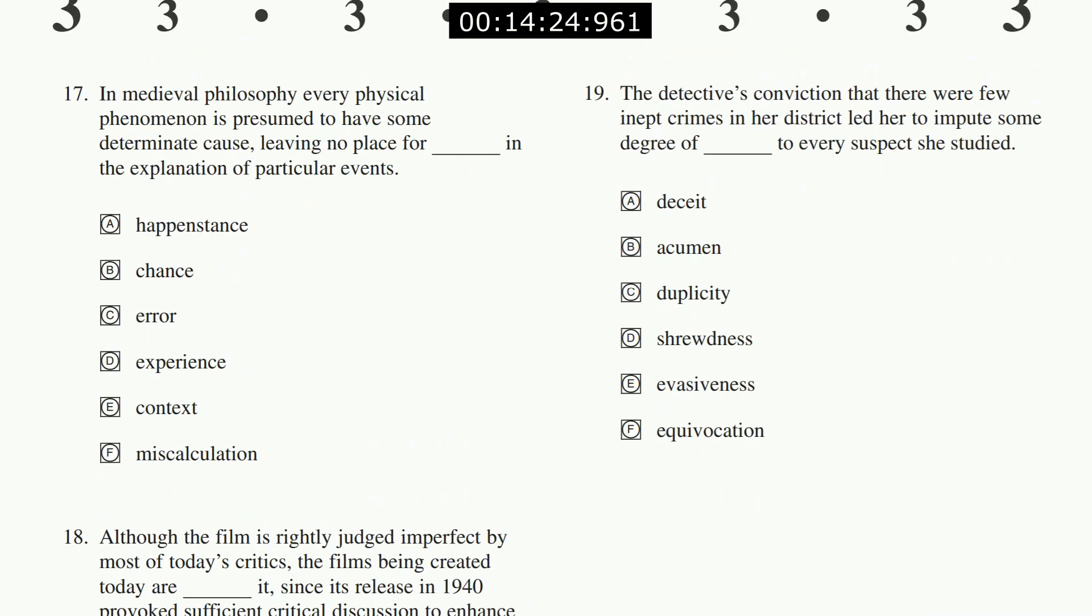The detective's conviction that there were few inept crimes in her district led her to impute some degree of sophistication or smartness—the opposite of inept, which means clumsy—to every suspect she studied. Some degree of acumen, maybe shrewdness fits with that kind of the opposite of inept. Shrewd. Acumen and shrewdness fit with my prediction—both mean smartness and cunning. Happy with that.